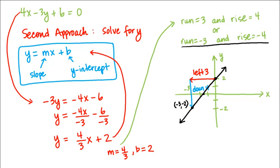And in fact, this point here — the x intercept — is the negative 3 halves that we just saw. These are two different approaches to graphing lines. Thank you, and we'll see you next time.